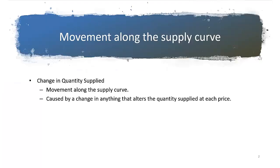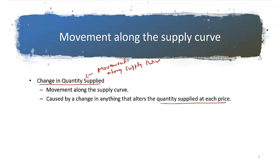So let's try to define first what movement along the supply curve means. Movement along the supply curve is also called change in quantity supplied. It's caused by change in anything that alters the quantity supplied at each price — specifically, a change in the price of the goods — which as a result changes the quantity supplied. So movement is caused by change in price.